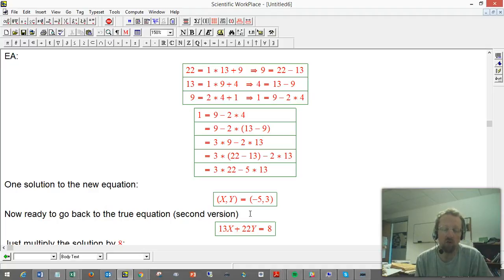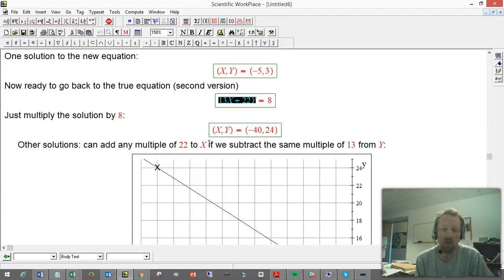We know that one of the solutions is just going to be take the x and y and multiply by eight. That's certainly going to make the left hand side bigger than one by a factor of eight, so it's going to turn into eight. So we multiply the solution by eight, and we get x, y is minus forty comma twenty-four. That gets us one solution of this Diophantine equation. The new part is getting all the solutions. But that's a really pretty simple procedure.